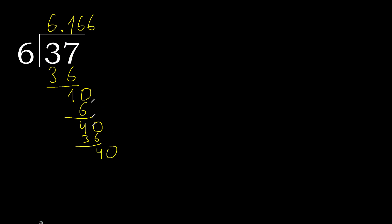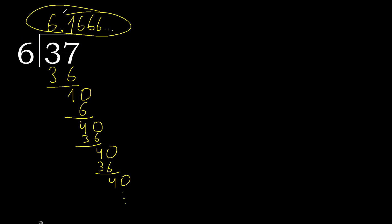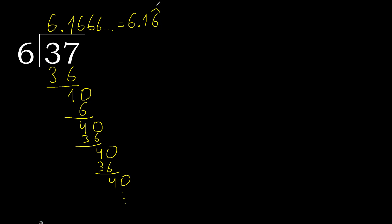40 divided by 6: 6 multiplied by 6 is 36. Subtract, complete. Here it repeats — therefore repeat. Therefore 6, repeat. Finish it. 37 divided by 6 is here, or after the point: 6, repeat.